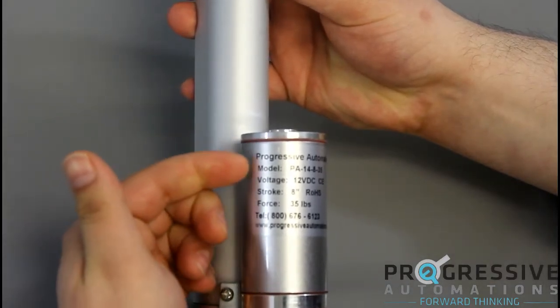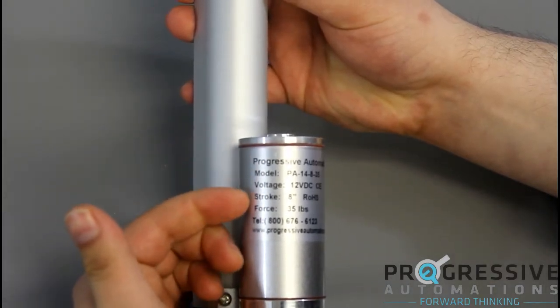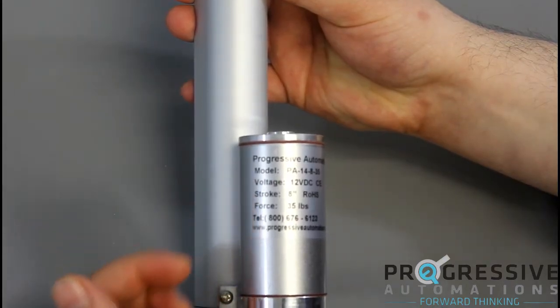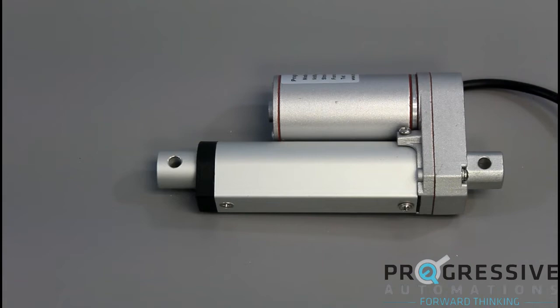All of our actuators list the model, voltage, stroke size, and force rating on the unit. First up is the PA14 Mini Linear Actuator. This unit has a two inch stroke.